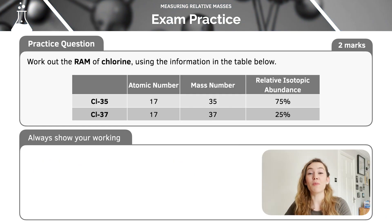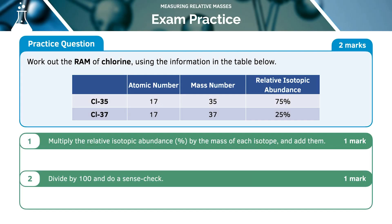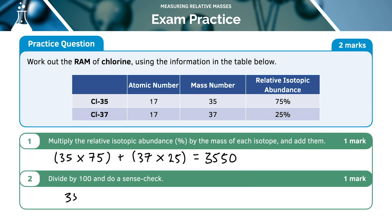Let's have a quick go at an example — pause the video and give it a go yourself, or wait for my work through. Using the information given here, I'm going to do isotopic mass times abundance, pretending I have 100 atoms. 75 of them would be chlorine-35, giving one value, and then I add the mass of chlorine-37 times its abundance of 25. That gives 3,550. The last step is to divide by 100, giving 35.5. Sense check: 35.5 lies between 35 and 37, and since 75% is chlorine-35, the answer is closer to 35 than 37 — it makes sense.